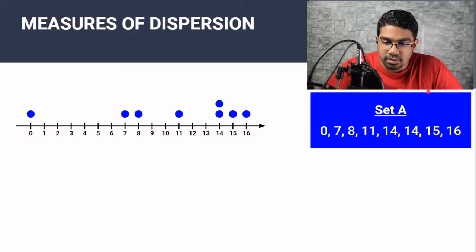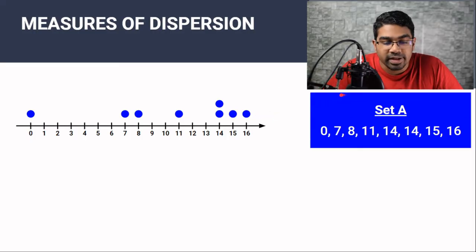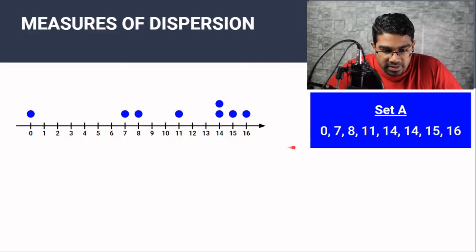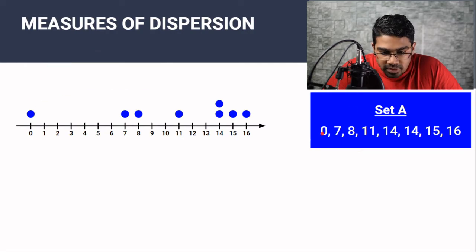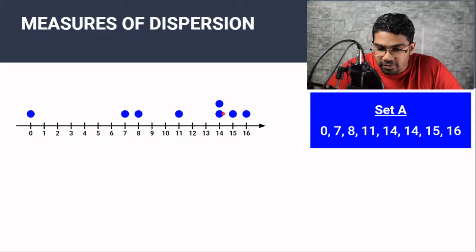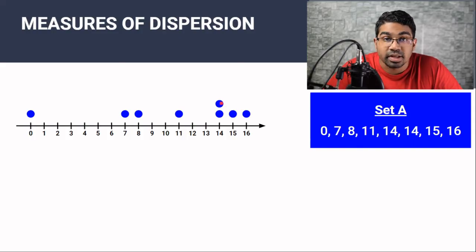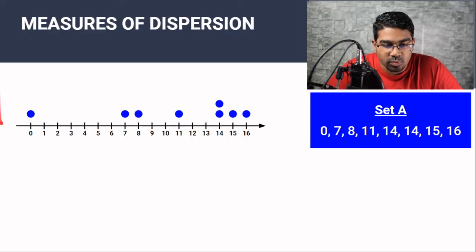When we look at a set of data, let's take set A for example. When we arrange the data in a dot plot like this — a dot plot contains a scale of numbers and we insert the data accordingly — so here we have 0, 7, 8, 11. We have two 14s and so we stack them up like this, and then we have 15 and 16. Now when we just look at this set of data, you can see that it is somewhat scattered. It is dispersed.